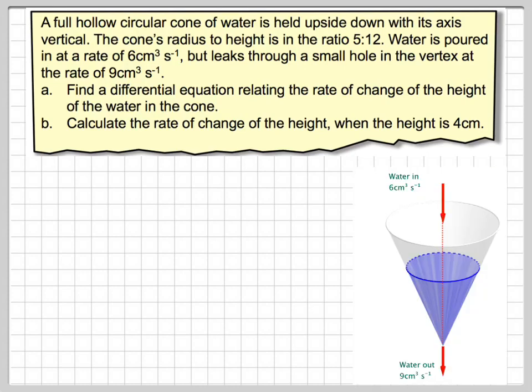What you should do with a problem like this is draw something out. So here is the drawing. The water going in is 6, the water going out is 9. If we mark on the radius where the water is and the height, we are required to find the rate of change of height, dh/dt.